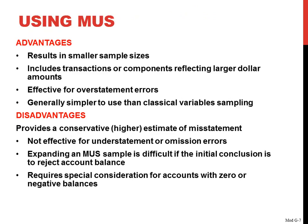Some of the advantages in using MUS is it results in smaller sample sizes, because you're selecting individual accounts and particular items. It includes transactions or components reflecting larger dollar amounts. It's effective for overstatement errors, and it's generally simpler to use than classical variable sampling, which is why you see it being used quite often.